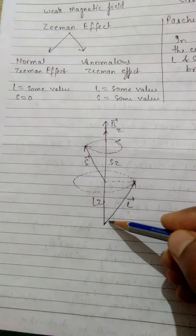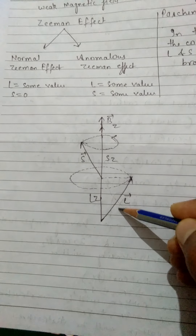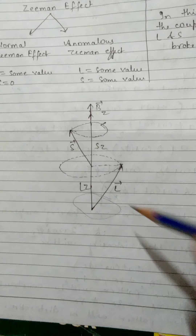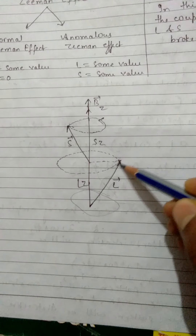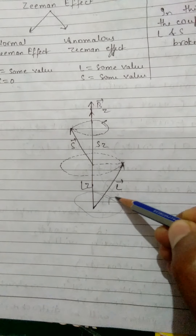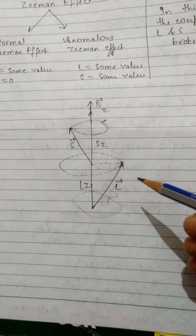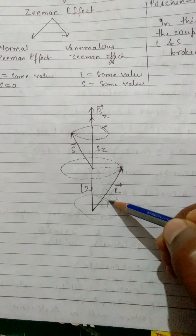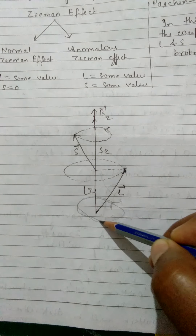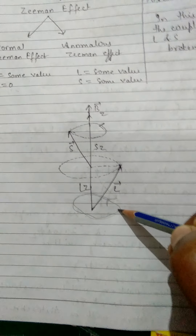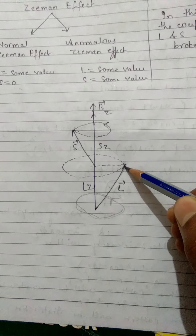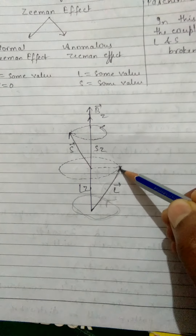तो देखते हैं उसका process क्या होगा। जब electron यहाँ पर है और orbital motion कर रहा है, तो इसका field कुछ इस तरह है। बाहर के field में यह क्या होगा — जब यह magnetic field है और electron का orbital motion होता है — तो इसके वजह से जो angular momentum है वो ऊपर की direction में लगेगा।